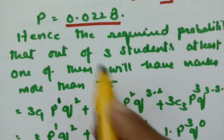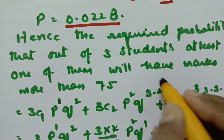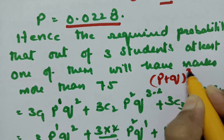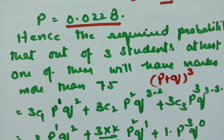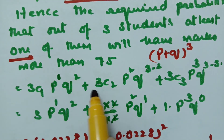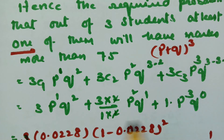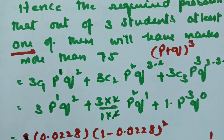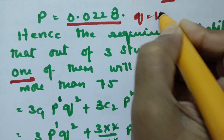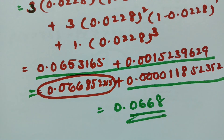Hence the required probability that out of 3 students (n = 3), at least one scores above 75 is 0.0668. We expanded the binomial from r = 1 to 3 using 3C1*p*q^2 + 3C2*p^2*q + 3C3*p^3, where q = 1 - p. This is the final answer.